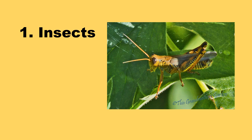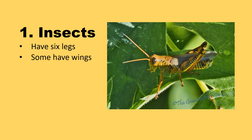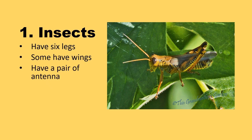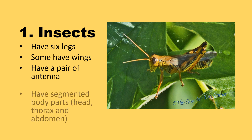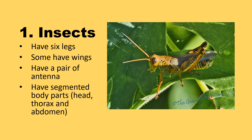Insects: they have six legs, some have wings, they have a pair of antennae, and they have segmented body parts including a head, thorax, and abdomen.